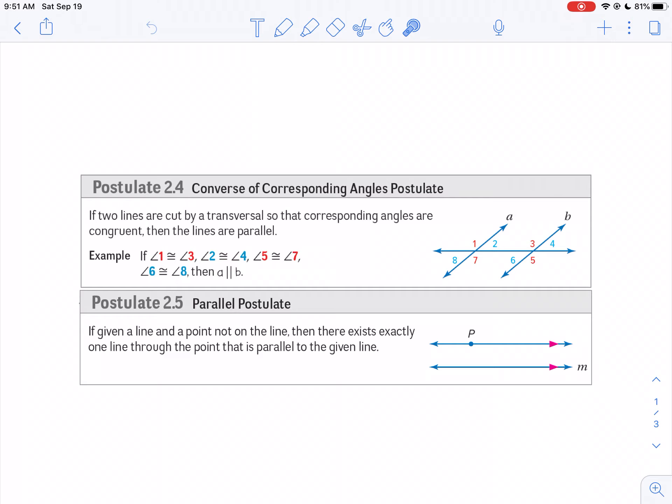The other one we're going to be using a little bit is, if you have a point not on a line, there's only one line that passes through that point that's parallel.